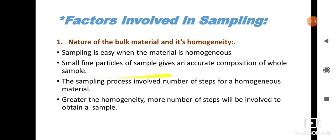If the material is homogeneous, there will actually be a very long process — that is, the steps we saw in the previous lecture: units of the population, sample, sampling technique, sample unit, increments, gross sample, subsample, and then the analysis sample. The greater the homogeneity, the more number of steps will be involved to obtain or draw the sample material.